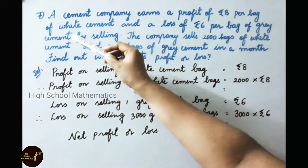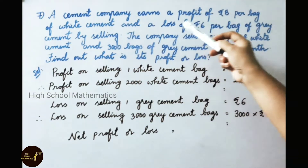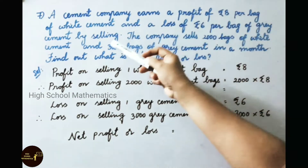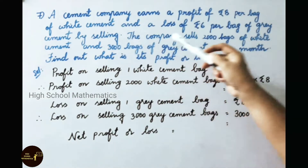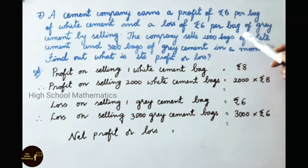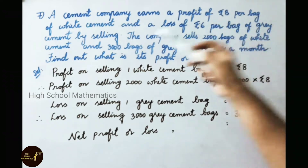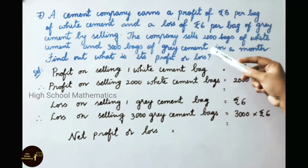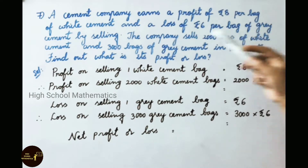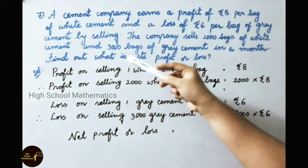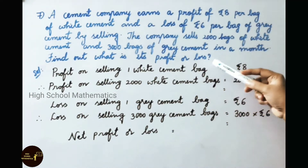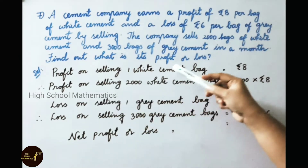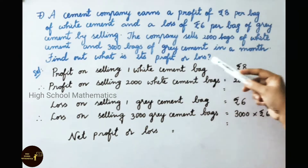See now question number 7. A cement company earns a profit of 8 rupees per bag of white cement and a loss of 6 rupees per bag of grey cement by selling. The company sells 2000 bags of white cement and 3000 bags of grey cement in a month. Find out what is its profit or loss.